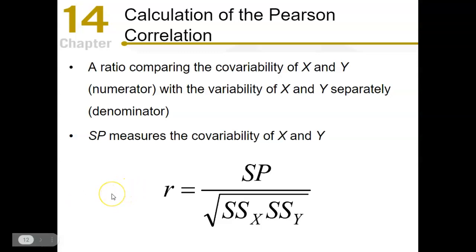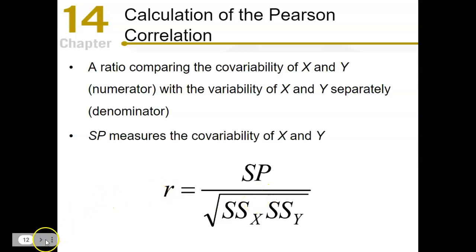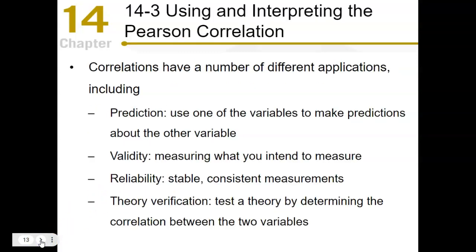Our final Pearson correlation formula is: sum of products divided by the square root of the sum of squares of X times the sum of squares of Y. It's a simple formula — we already know where these components come from, so conceptually this should not be too difficult to grasp.